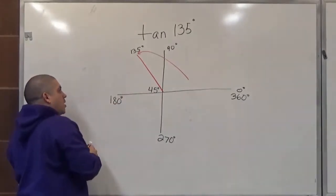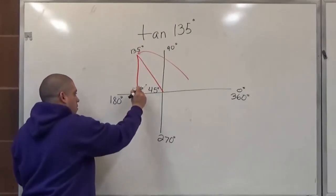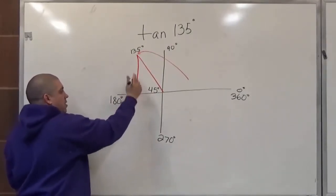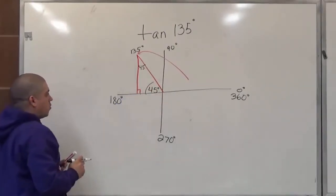So now from there we can create our triangle. And since this is 45 and this is 90, this has to be 45 as well. So this is the key angle we're going to be working with.